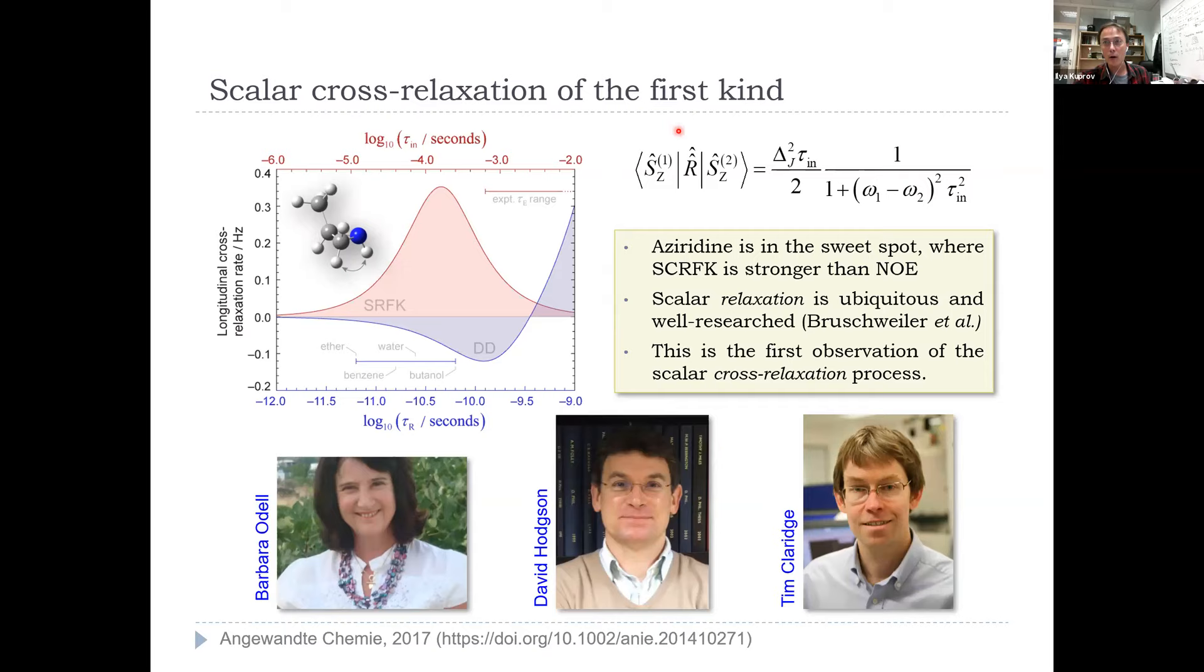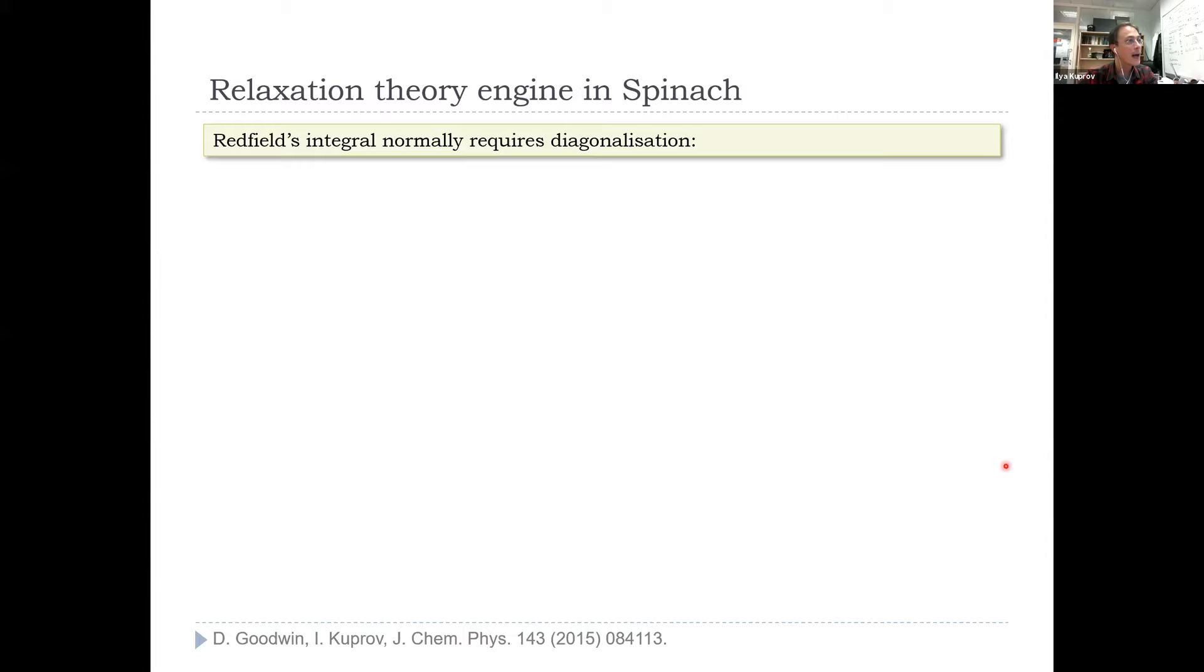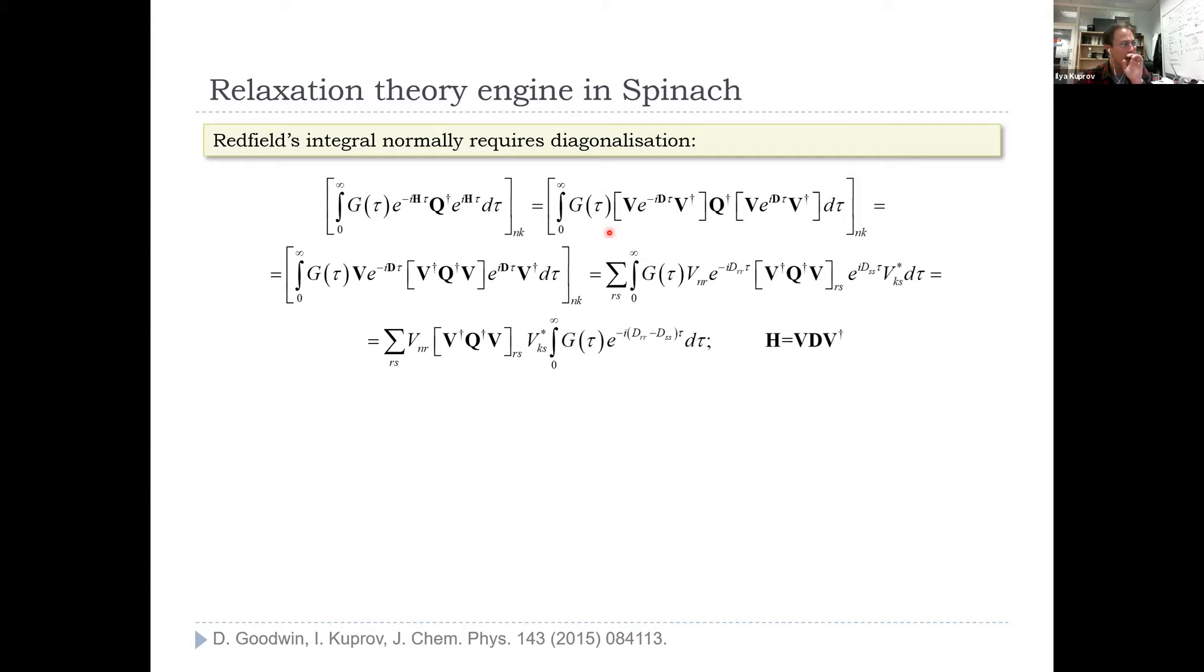All of that became possible as a result of this relaxation theory engine in Spinach. If you look at it from the numerical perspective, it's also pretty damn hard. That's Redfield's integral, and you can see it's a giant super operator valued Fourier transform, and it's really hard to compute. The way previously to compute it was to diagonalize the Hamiltonian, and after a great amount of nitty gritty, it becomes a great collection of Fourier transforms. Except, of course, the key word here is diagonalize the Hamiltonian.